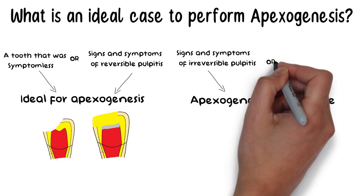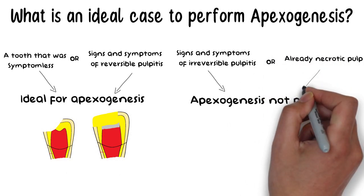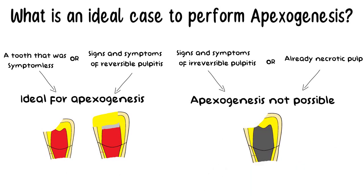Same goes for a tooth already having a necrotic pulp. In these teeth, there is no healthy pulp present that can continue the root development. For these type of teeth, Apexification rather than Apexogenesis is the recommended treatment option.